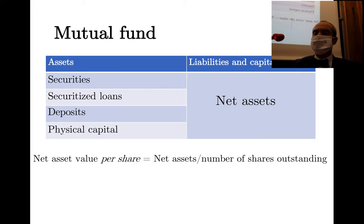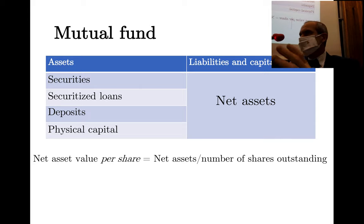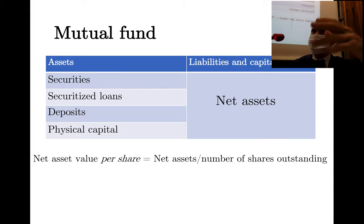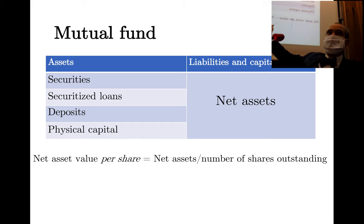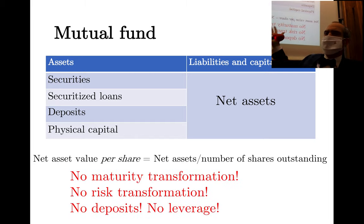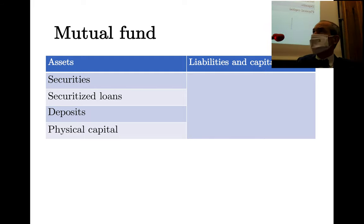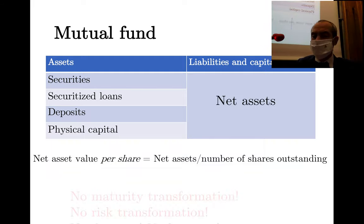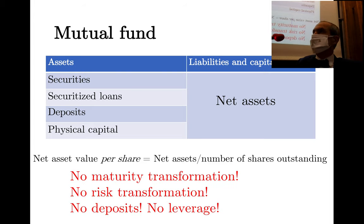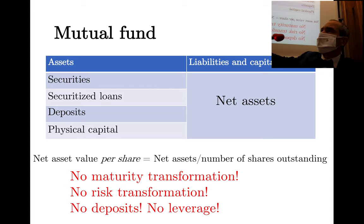The liability side of a mutual fund is constituted by the securities issued to investors, and their value is exactly the value of the assets — everything is completely transparent. In a mutual fund there is no maturity transformation, no risk transformation, no deposit, no leverage — only shares representing the assets.